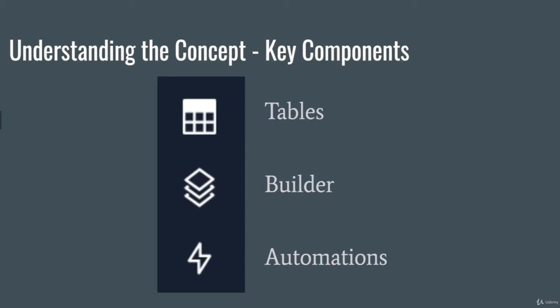In this video we'll learn about how Honeycode actually works. There are three main components of any Honeycode app: tables, builder, and automations. They're present in every Honeycode app. We're going to learn about what each one of these components are and how they all work together and are connected.